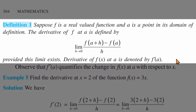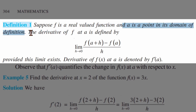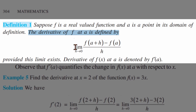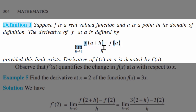Next, we will look at derivatives. Suppose f is a real-valued function and a is a point in its domain of definition where f of a exists. The derivative of the function at a is given by: limit h tends to 0 of [f(a + h) − f(a)] divided by h. If this limit exists, we have the derivative of f at a.